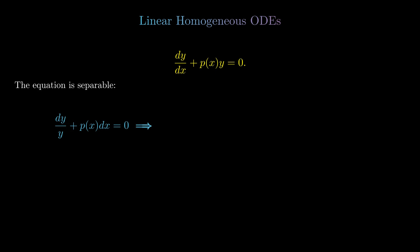By taking the p(x)dx over to the other side, we see that dy/y = -p(x)dx. Integrating both sides, the left-hand side is just ln|y| + c, and that's of course just equal to minus the integral of p(x)dx.